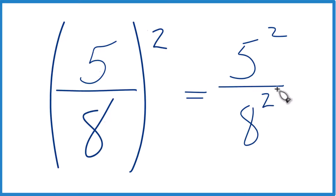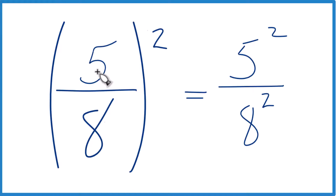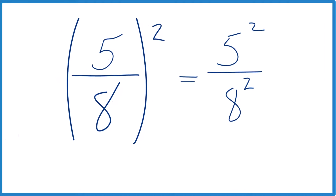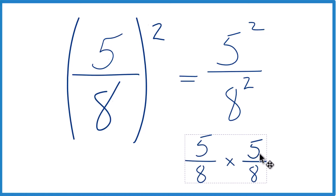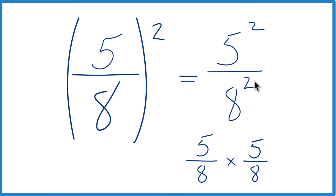And this is the same thing as this right here, just written a little differently. Because if you think about it, 5 eighths squared — that's 5 eighths times 5 eighths, just like this right here. So 5 times 5, that's the 5 squared. 8 times 8, that's the 8 squared. That's why they're the same.